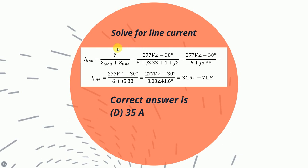Here is the solving for the line current where we have 277 volts divided by the impedances that are in series together. We come up with the result of around 35 amps.